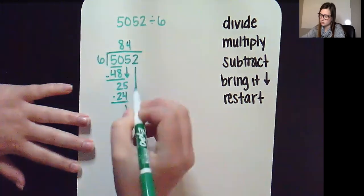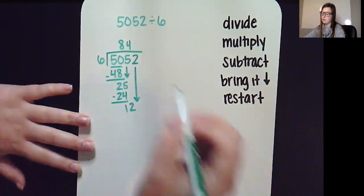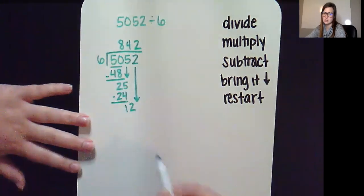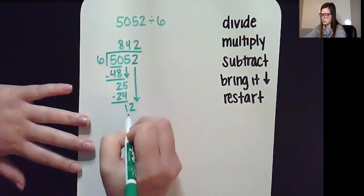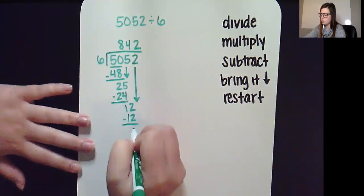Bring down the 2. If I have 12, I can make 2 groups of 6. 2 times 6 is 12.